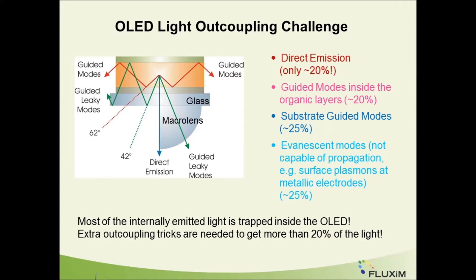This picture shows the different optical channels excited by the recombination of a hole and an electron inside the thin film layer stack of the OLED. Not all the light will be able to get out of the device — a part will be waveguided or guided inside the substrate, and some light will also excite plasmons at the metal electrode. Finally, only approximately 20% of the light will be able to leave the device.